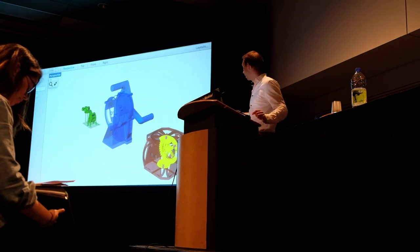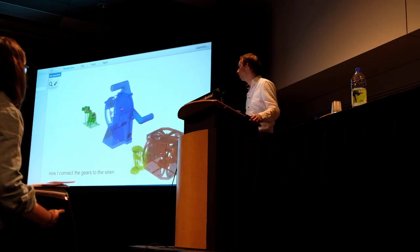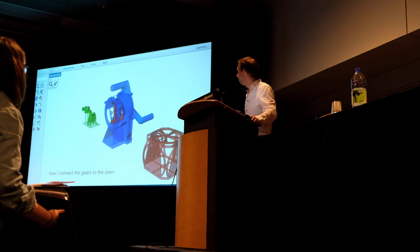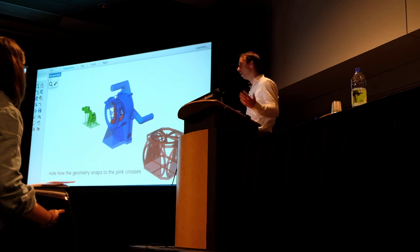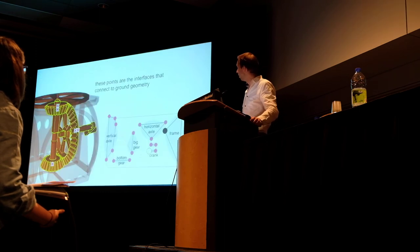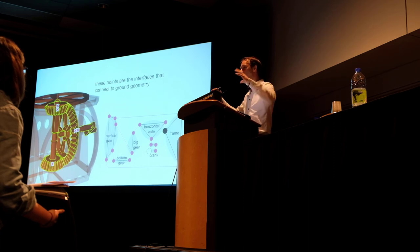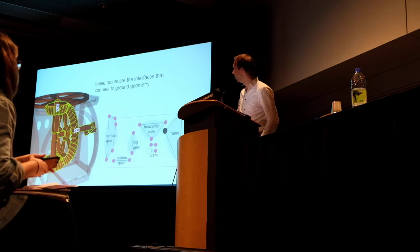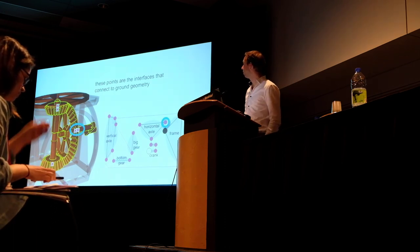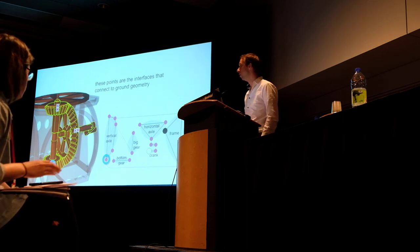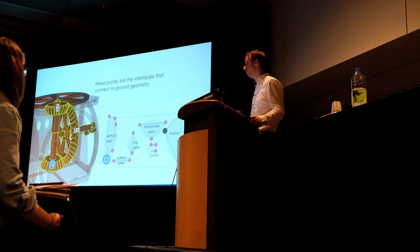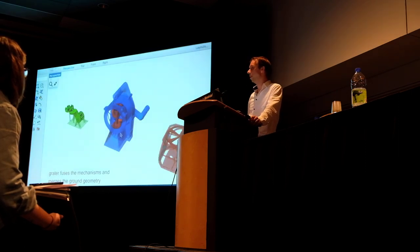I've clicked twice and selected the bevel gear mechanism. Now I'm going to put it inside the siren, as in the interaction seen at the beginning. Pink crosses show up — these are the snapping points where different mechanisms can be recombined and attached to each other. They are also created based on the same model graph. They represent all the points that are the last connection until we reach the frame, so they are the points where an axle could be connected to the machine — in this case the gear on top, the gear on the side, and the one on the bottom.